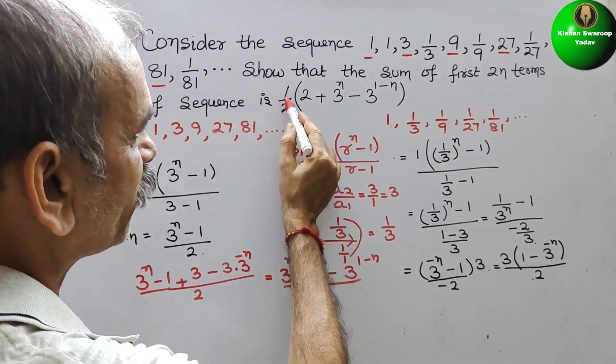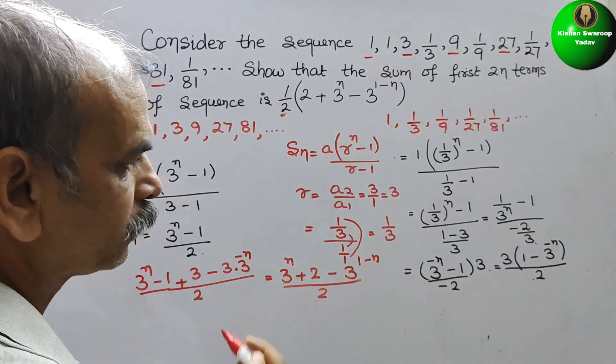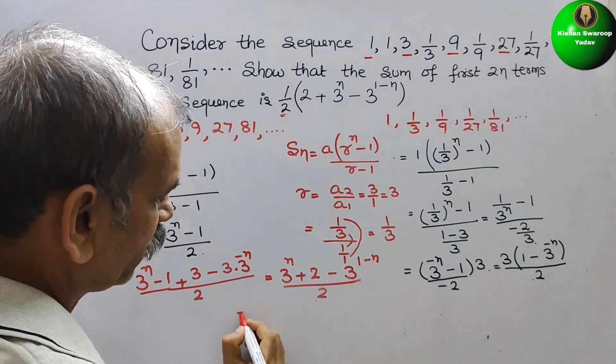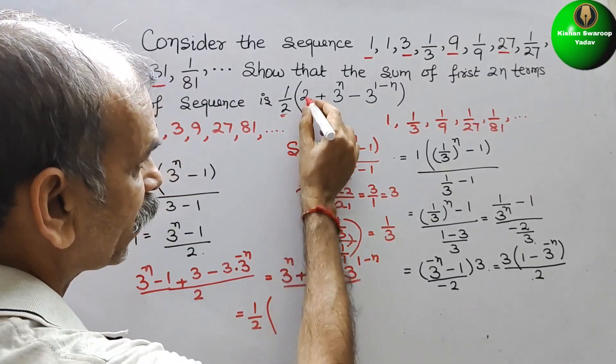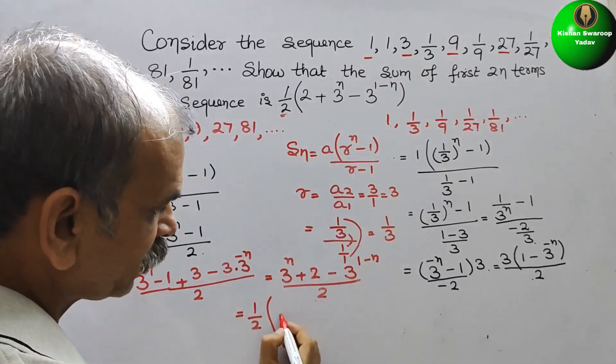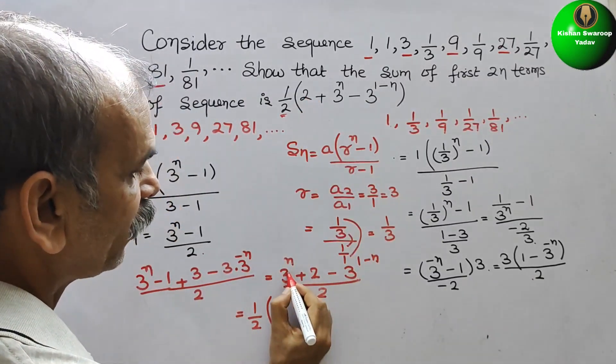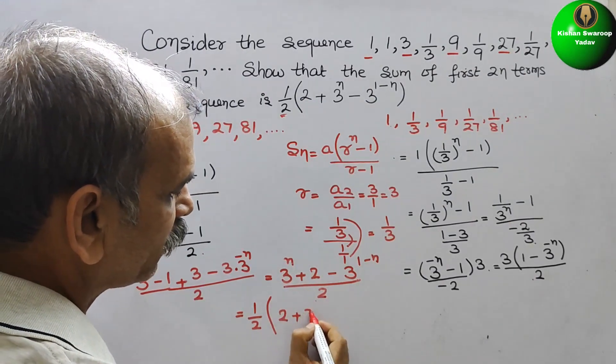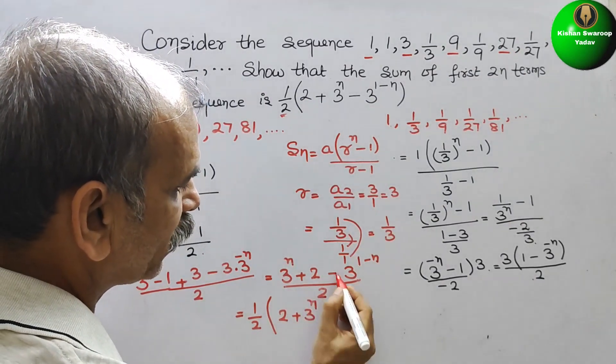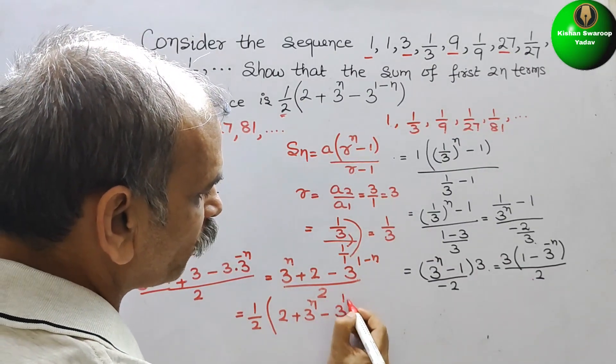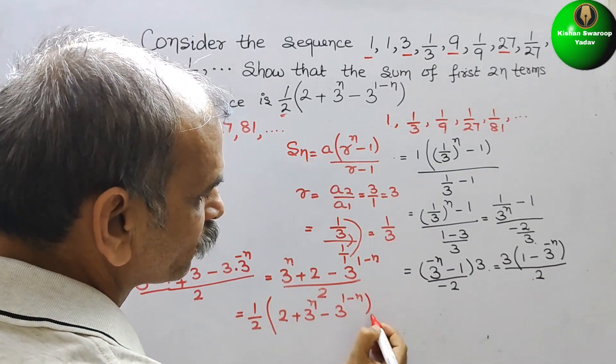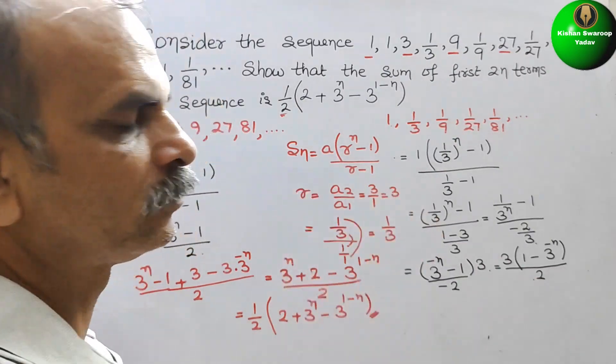So this will be your answer. Here what they have taken? They have taken 1/2 as a common. So we will also take 1/2 as a common. So here comes 2. First they have written this, second they have written this plus 3^n, 3 to the power of n. Lastly, they have written this minus 3^(1-n). So like this, we have to do it.